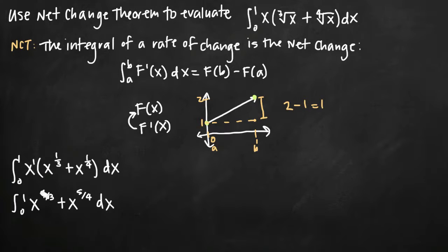Then when we evaluate, we'll add 1 to the exponents. So 4 thirds plus 1, in other words 4 thirds plus 3 thirds, is 7 thirds. So we get 3 sevenths x to the 7 thirds plus, again here, adding 1 or adding 4 fourths gives us 9 fourths. So then we get plus 4 ninths x to the 9 fourths. And we're evaluating this whole thing on the interval 0 to 1.